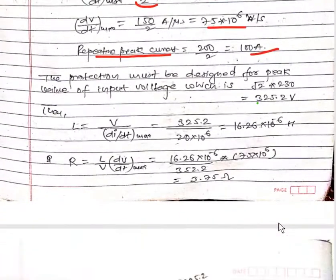The protection must be designed for the peak value of input voltage. Here we have the input voltage 230 volt. So for the peak value we have √2 × 230 which equals 325.2 volt.